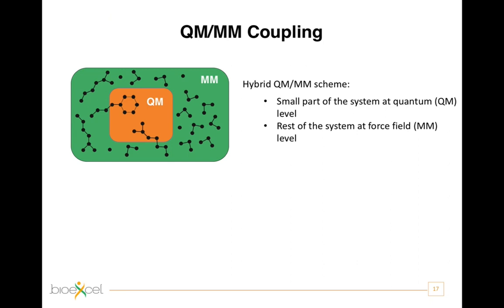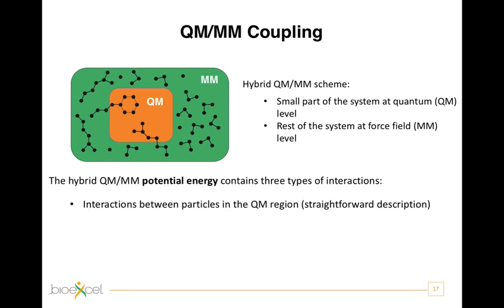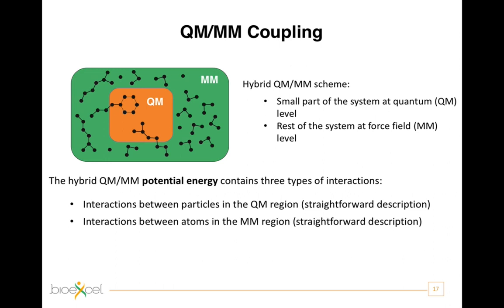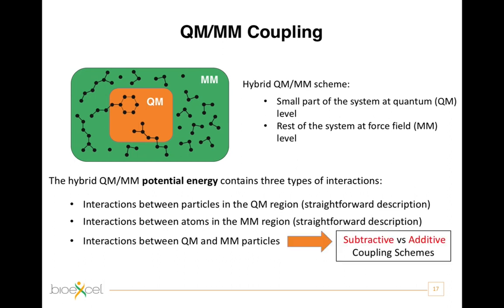Special attention has to be paid when coupling the quantum and the classical regions. In particular, in the Hamiltonian of this fictitious QM/MM system — fictitious because the real system is not separated into parts with two different physics — the potential energies contain three types of interactions: interactions between particles in the quantum region, that is between electrons and nuclei; interactions between atoms in the classical region; and interactions between quantum particles and classical particles. According to how one takes into account these last interactions, the different QM/MM schemes can be grouped in subtractive and additive schemes.